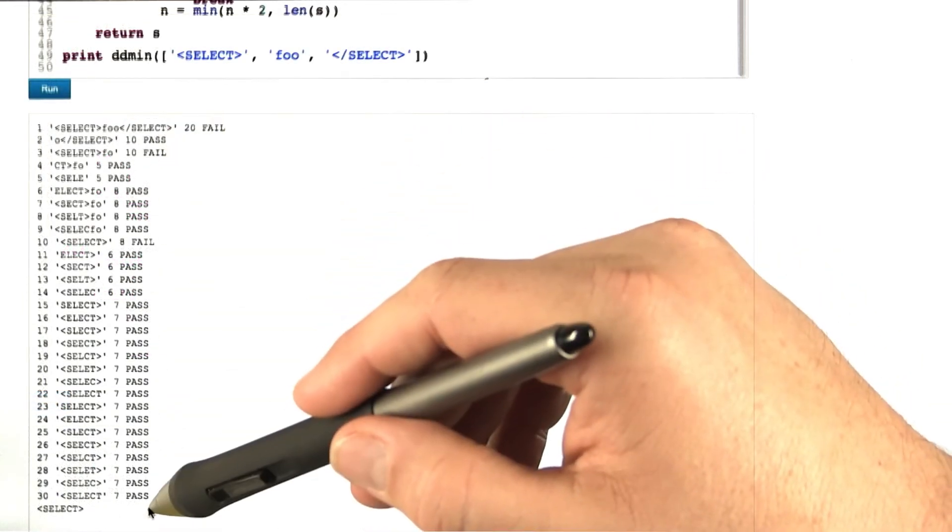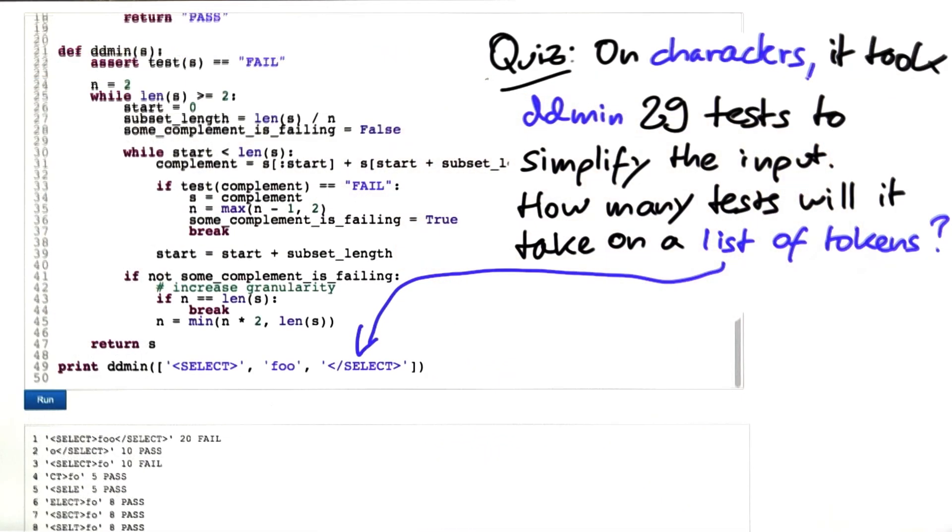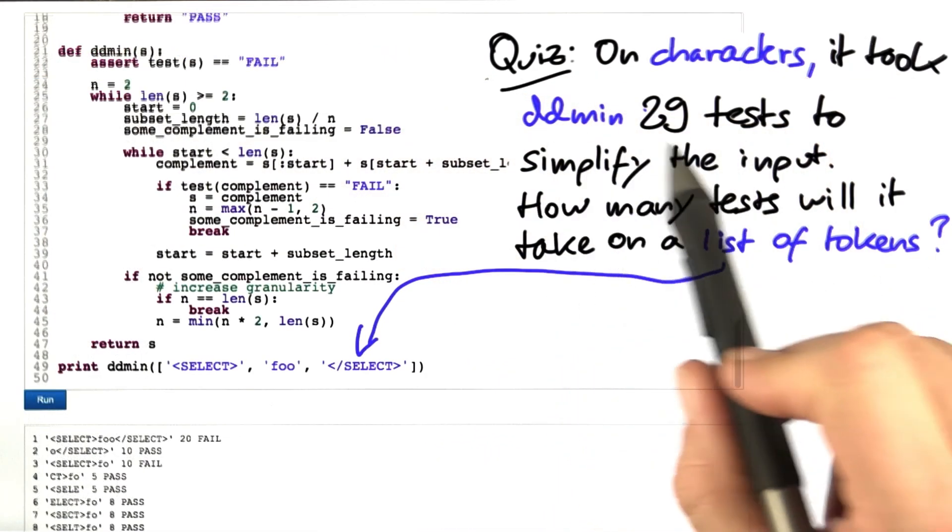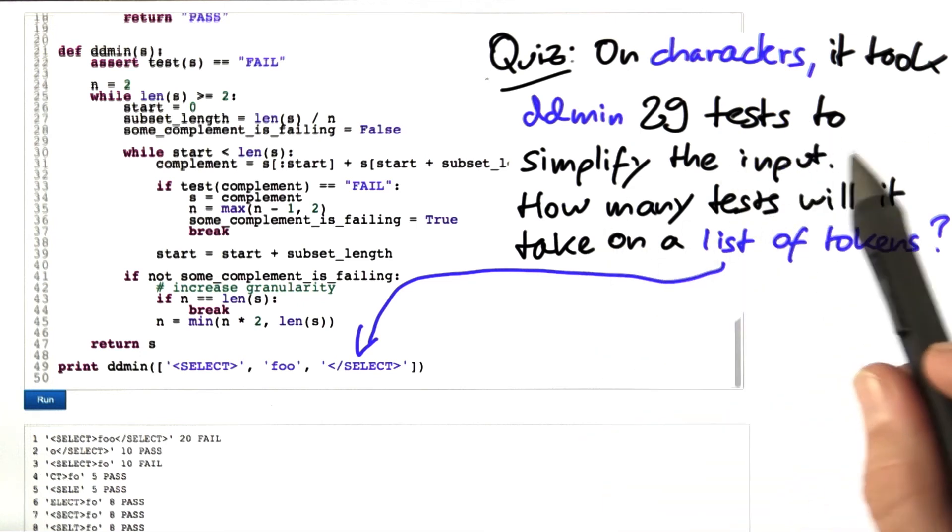In our initial setting, it took us 30 tests until we minimized the input. So, on characters, we have seen it took ddmin 29 tests, again excluding the assertion, to simplify the input.